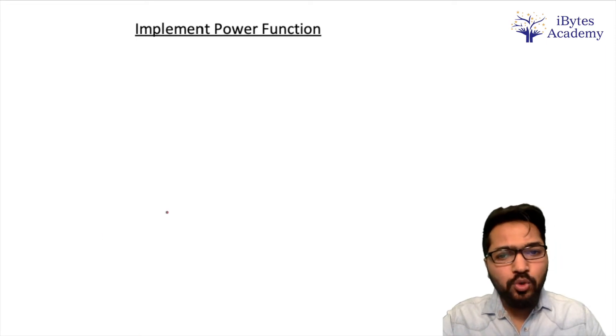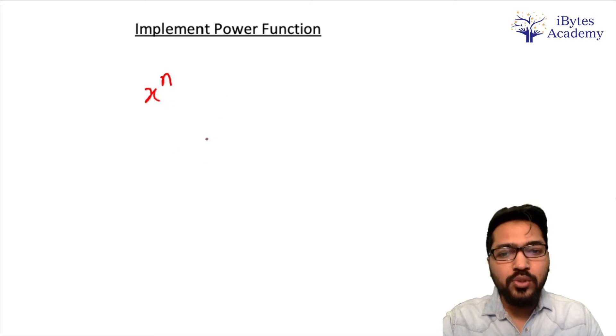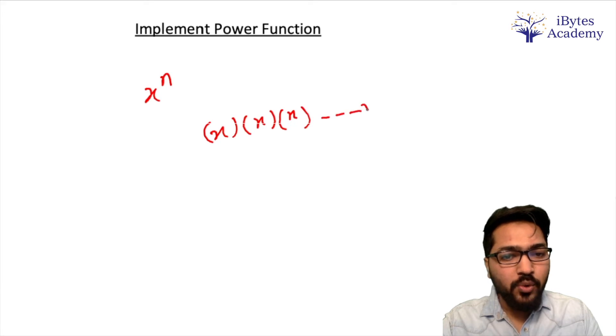That is, we have two numbers given, let's say x and n. We have to find x to the power n and our solution should be better than O(n). O(n) means x multiplied n times, that's it.